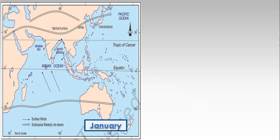This is the weather condition of the January month. Look at how subtropical jet streams blow over 30 degrees north latitude and affect the climate of the northwestern part of India.